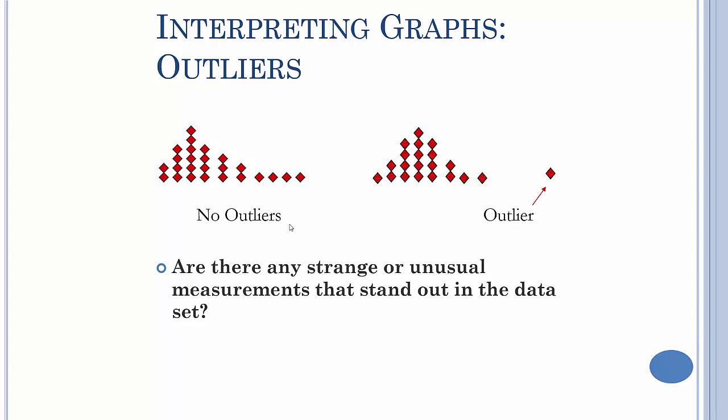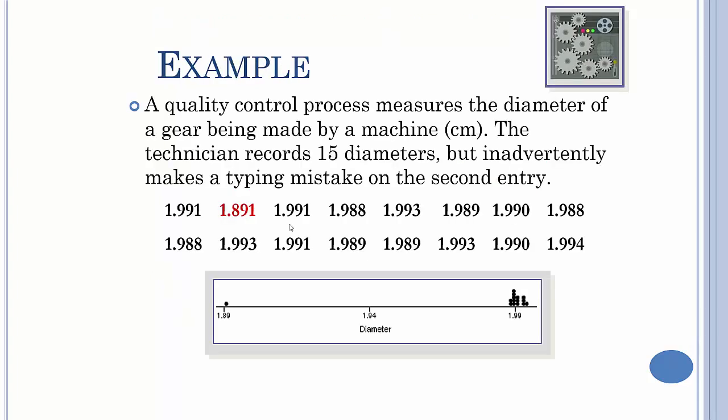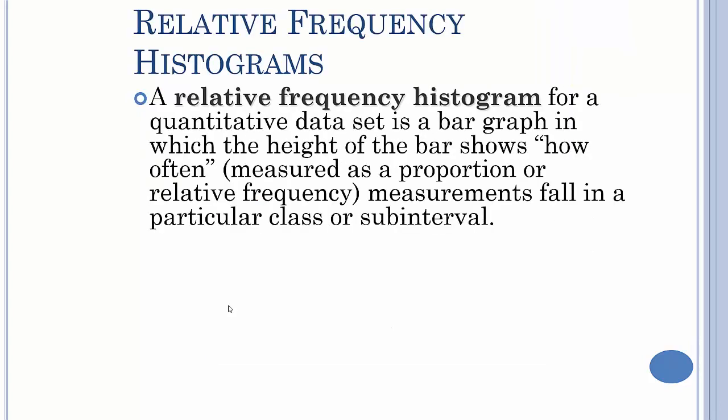Here's a simple example where you have a quality control process that measures the diameter of a gear using a machine. They record 15 diameters and inadvertently you make a typing mistake and you put in probably 1891 when it probably should have been 1991, 1.991. So when you measure it, you can see on the graph that this thing is all by itself, most likely an outlier, that tells you, hey, better double-check things, and that's a typo, so you can catch that and fix it.